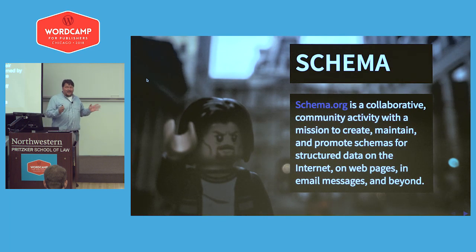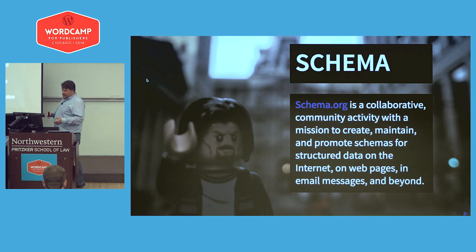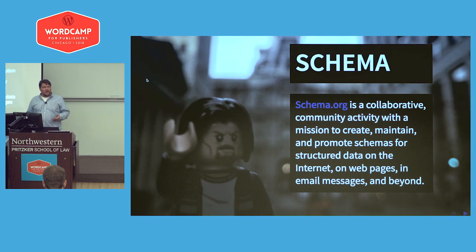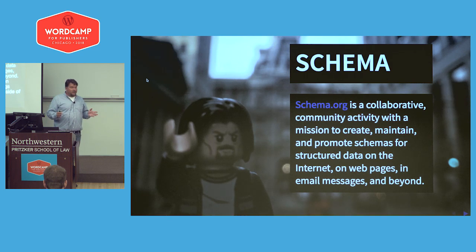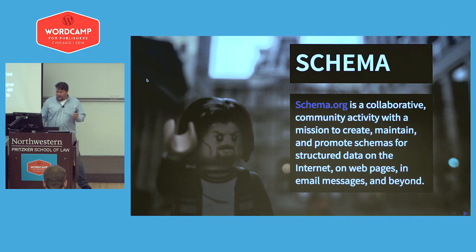Let's talk about schema. Schema.org is the evolution of this metadata — it's a collaborative community whose goal is to create, maintain, and promote schemas for structured data on the internet, web pages, email messages, and beyond. If you're sending emails, the email schemas are really cool too — you can do things like have your app say that this is an event and add it to your calendar.